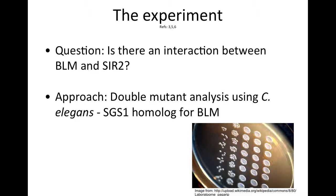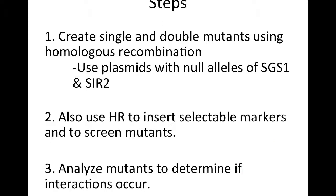To test this interaction, we propose using a double mutant analysis in yeast. The first step in our procedure is to use homologous recombination between plasmids that contain null alleles of SGS1 and SIR2 and the yeast chromosomes to create single and double mutants. Then we will use homologous recombination to insert selectable markers in the mutant lines.